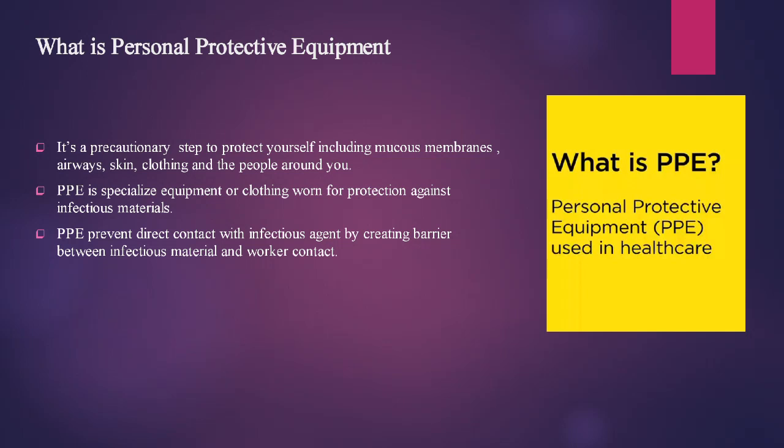ان تینوں lines میں تین points نکالے۔ Number one: سب سے پہلے یہ protect کرتا ہے worker کو — اس کی skin کو، اس کی clothing کو، اس کی airways کو، اور جو لوگ worker کے direct contact میں آ رہے ہوتے ہیں انہیں بھی protect کرتا ہے۔ Number two: یہ ایسے equipment اور clothing ہوتے ہیں جو wearable ہوتے ہیں، for protection against infectious material۔ Third point: یہ barrier کے طور پر کام کرتا ہے between infectious material and the worker.